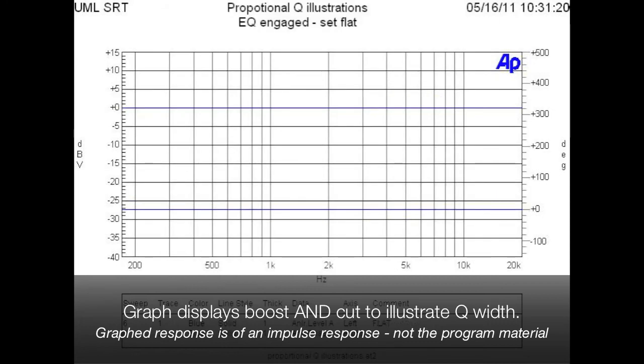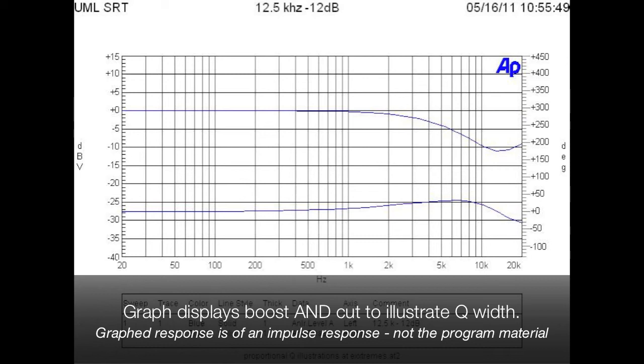And back to flat, take the filter to its extreme cut, minus 12 dB, begin with 12.5 kHz, cut 12 dB. Now 10 kHz, 8 kHz, 5 kHz, 3 kHz, 1.5 kHz, finally 800 Hz, returning to flat.